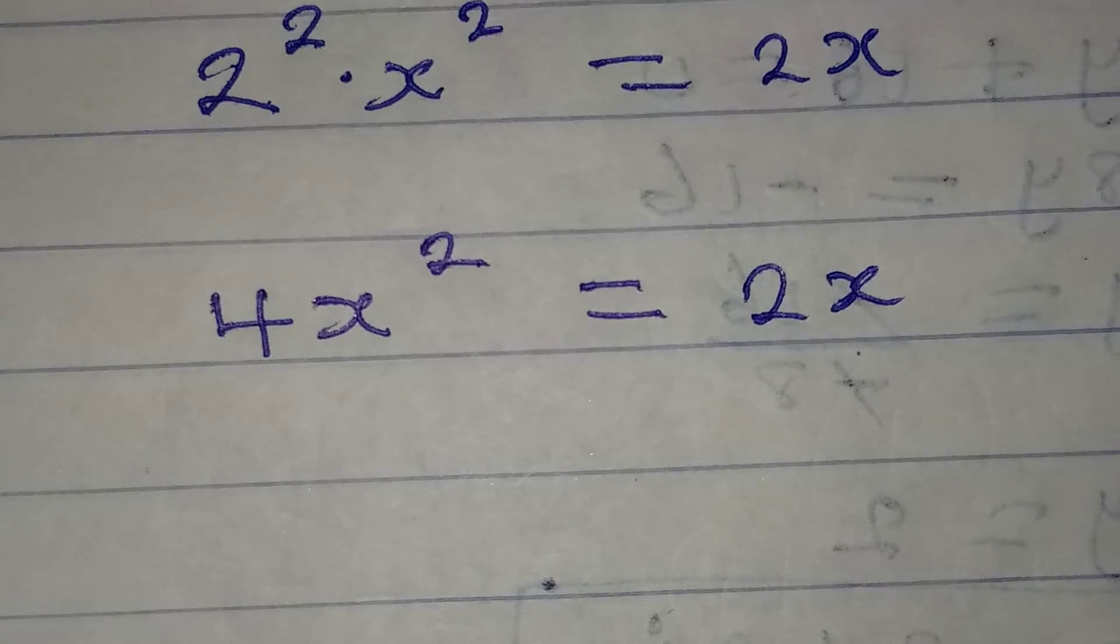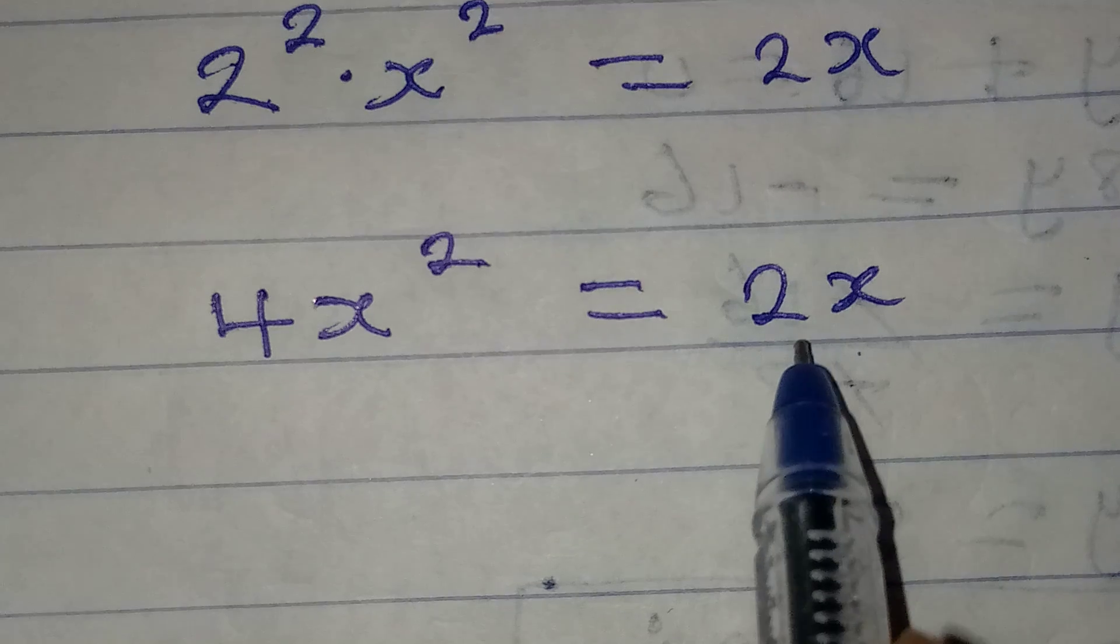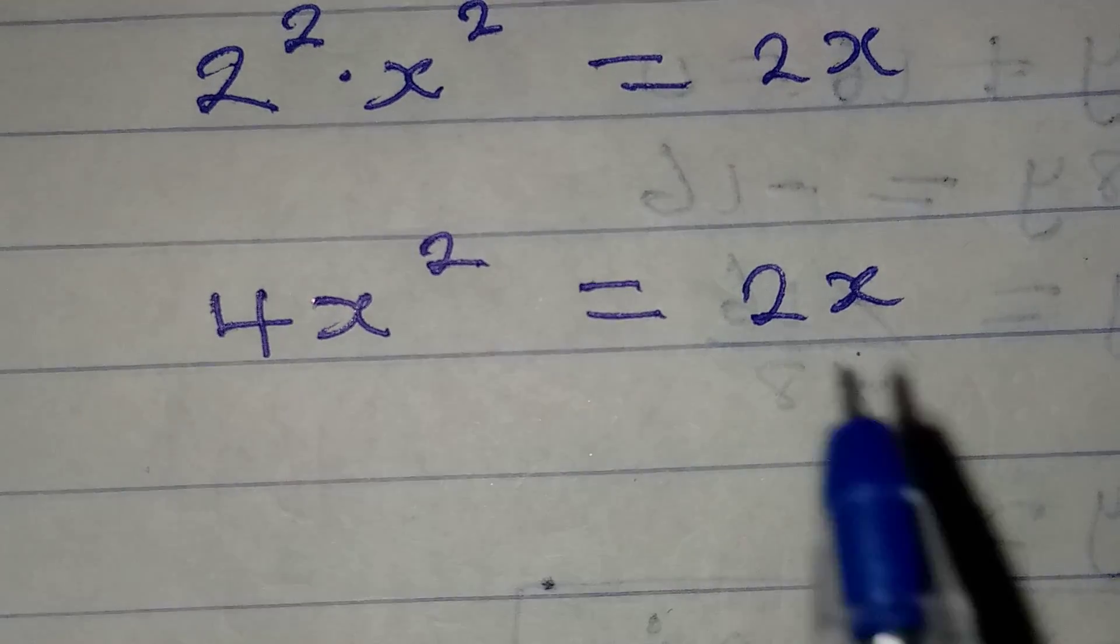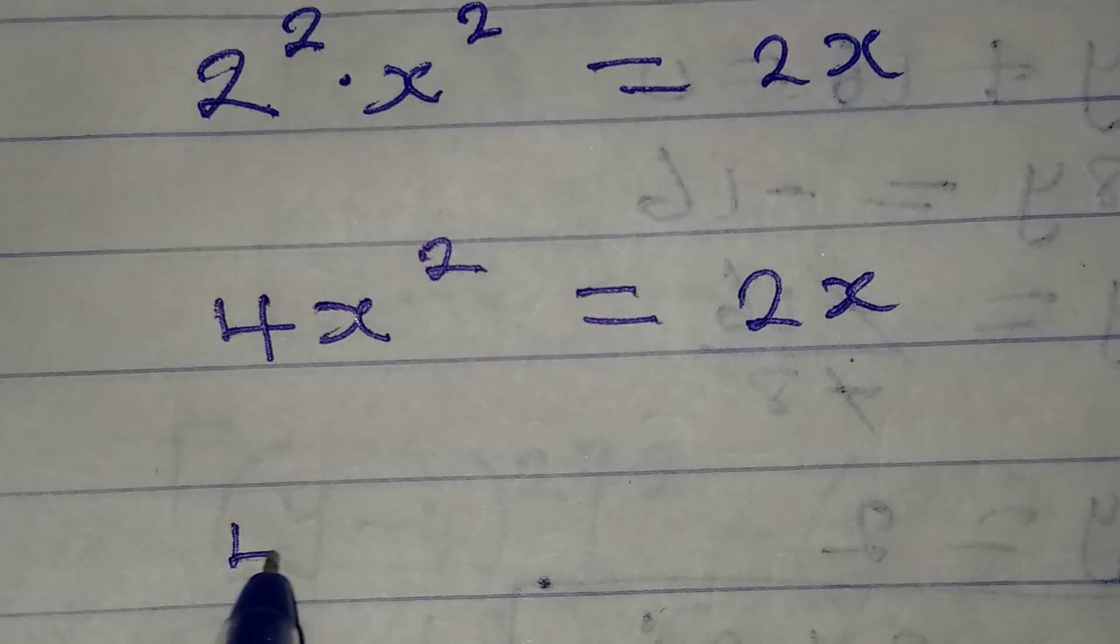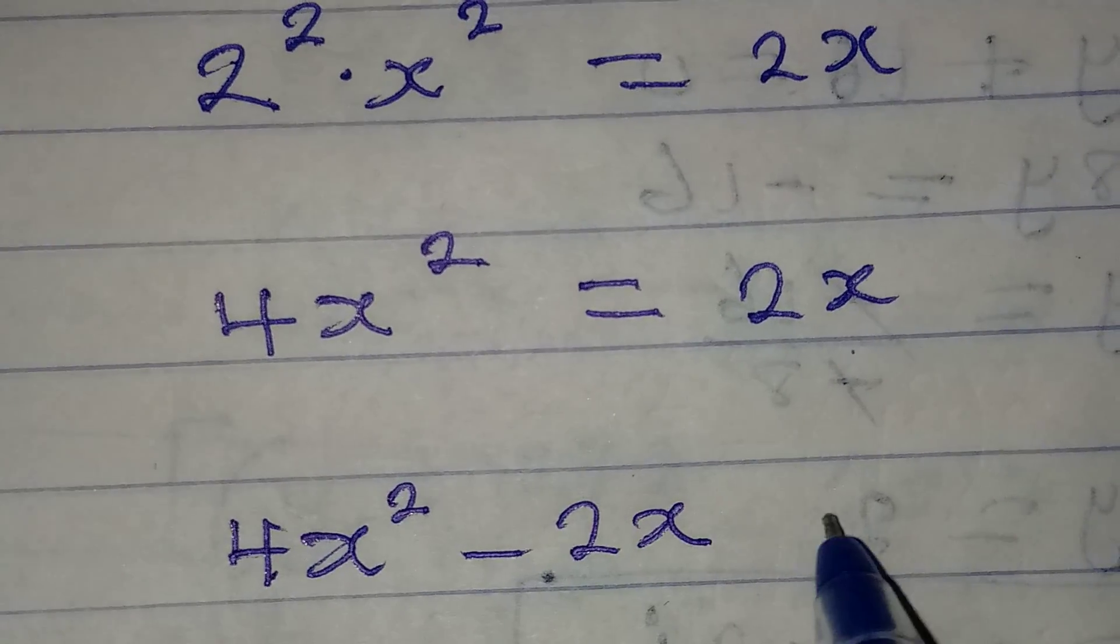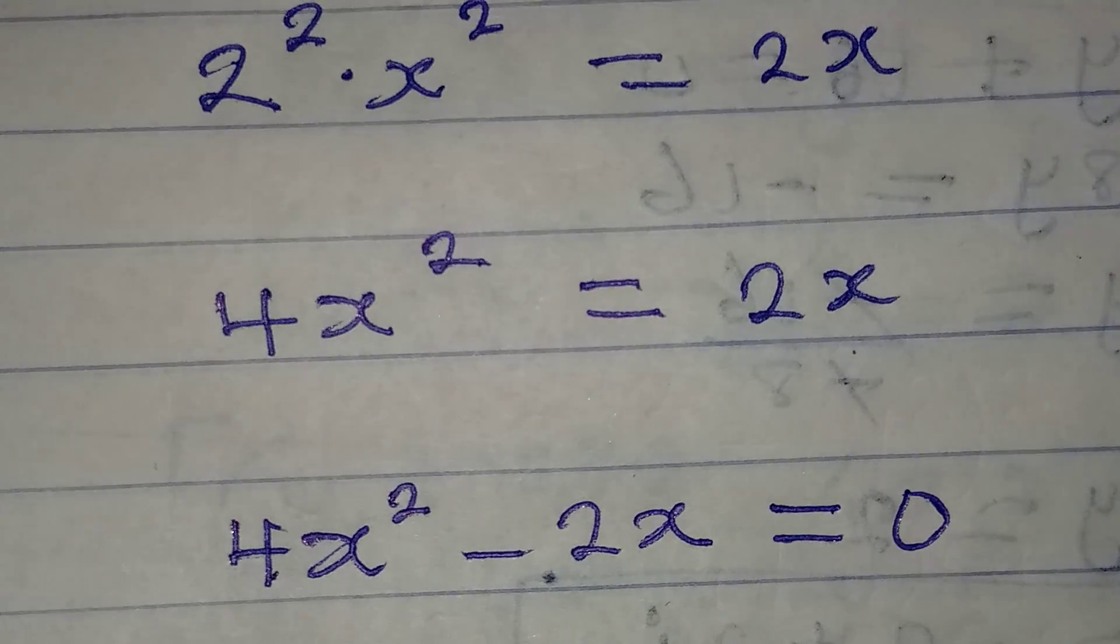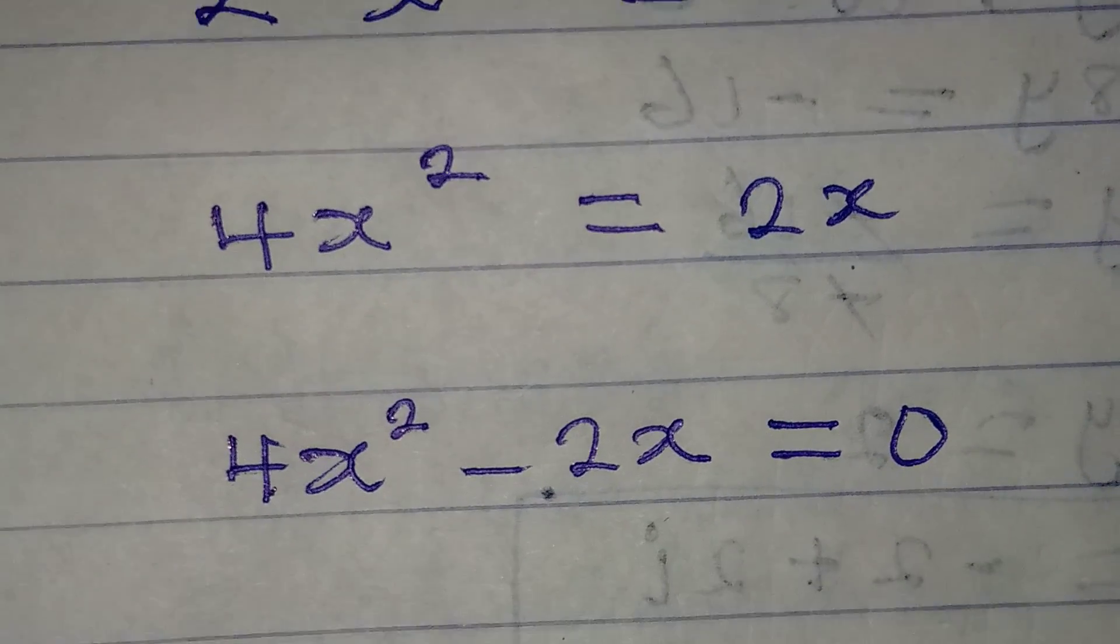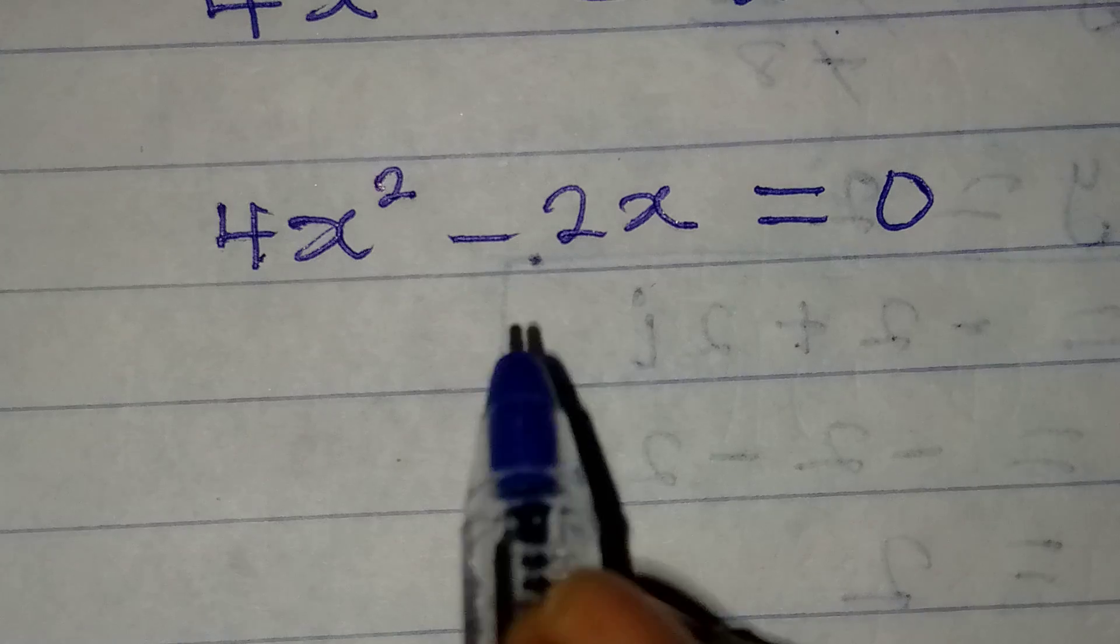The next thing you should do is bring 2x to the left so that we have 4x² - 2x, and this will now be equal to zero. By the way, this is a quadratic equation that we can factorize.